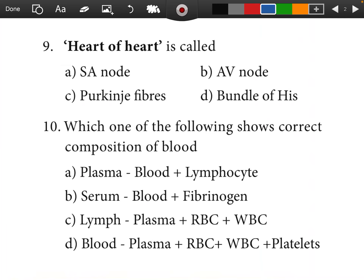Question 9: The pacemaker of the heart is called the S-A node. Question 10: Which of the following shows the correct composition of blood? Blood consists of plasma, RBC, WBC, and platelets.